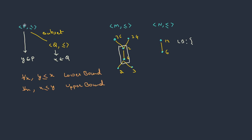Lower bounds says that you can pick any element from P — it should always be less than or equal to any element belonging to Q. Starting from the lowest level: 2 — is it less than 6? Yes. Is 2 less than 12? Yes. So we can include 2. How about 3? Yes, 3 is lower than 6 and 12, so 3 can be included. How about 6? Since partial order is reflexive, 6 is less than or equal to itself and less than or equal to 12, so 6 can be included. Now 12 is less than or equal to itself but not less than or equal to 6, so the condition fails. Therefore we have only 3 lower bounds: 2, 3, and 6.